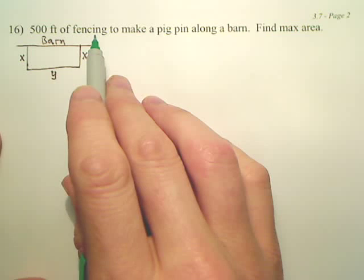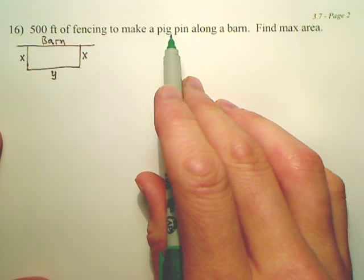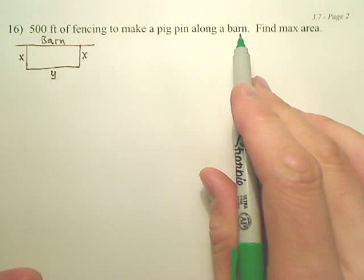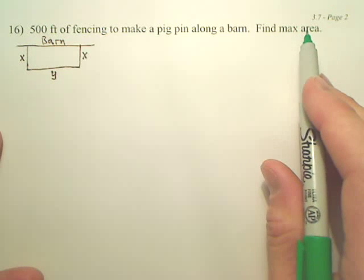For this 500-foot amount of fencing, that's your perimeter. You want to make a pig pen or a horse corral. One side's a barn. Find the maximum area.